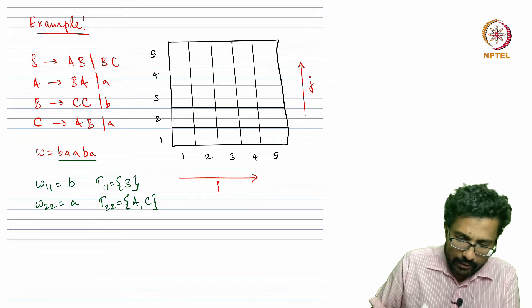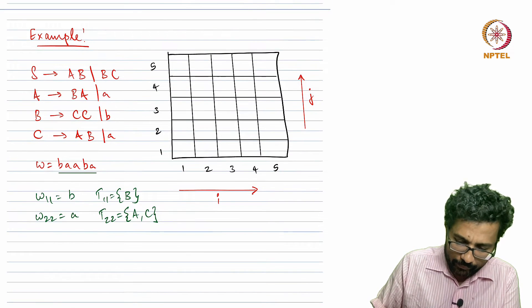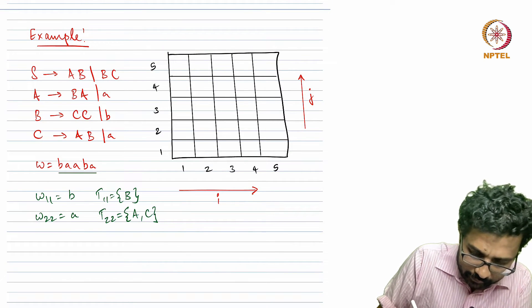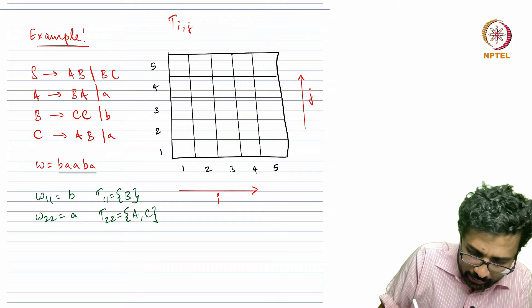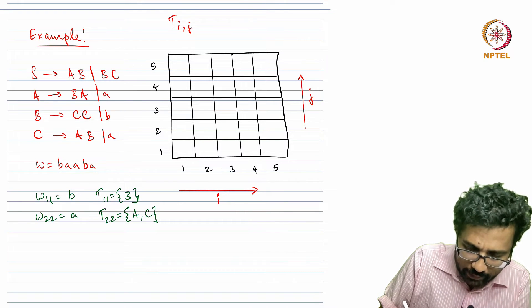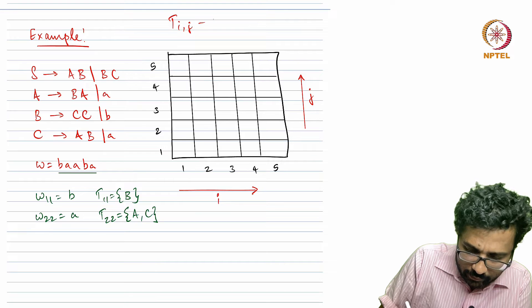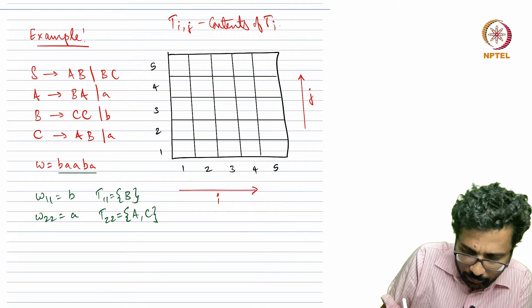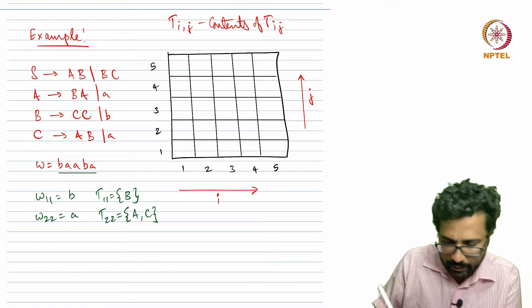The grid I have built is for writing the sets T[i,j]. I will populate the contents of each set T[i,j] in their respective boxes.